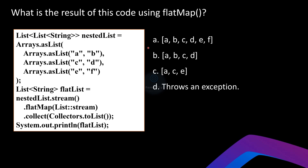Next we have a question about the `flatMap` method in Java streams. You can pause the video and come up with your answer. Let's break down the code step by step. First is nested list creation — we are creating a nested list, which is a list that contains other lists inside it. In this case we have three inner lists: the first contains A and B, the second contains C and D, and the third contains E and F.